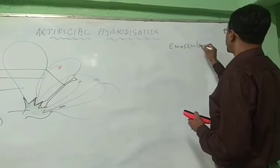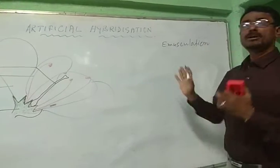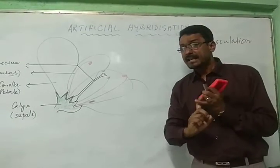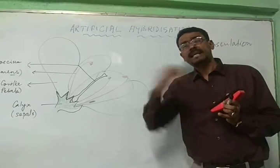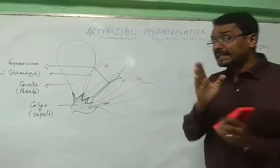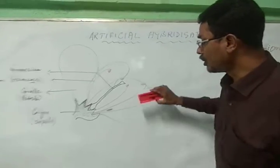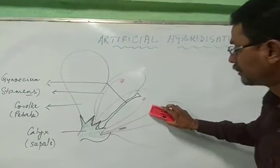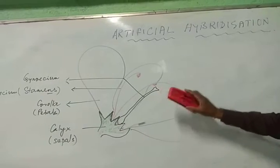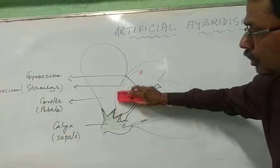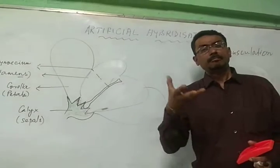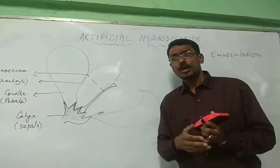Emasculation — what is the meaning of emasculation? When the flower is in the bud condition, then the androecium parts are taken out with the help of some scalpel or scissor. That is called emasculation. See here, these are the androecium parts in this flower. There will be no androecium — it is artificially taken out. So this process is called emasculation, and it is done when the flower is in bud condition.